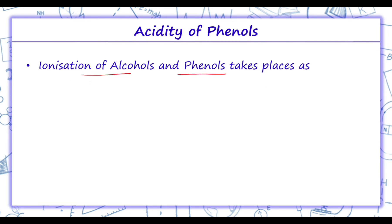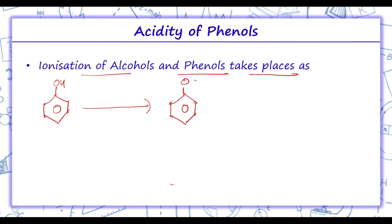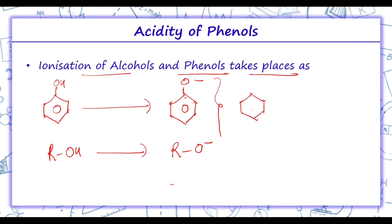The ionization of alcohols forms an alkoxide ion, while ionization of phenols forms a phenoxide ion. In the phenoxide ion, the charge is delocalized due to the presence of alternate double bonds. Due to this delocalization of charge, the phenoxide ion is more stable as compared to the alkoxide ion.